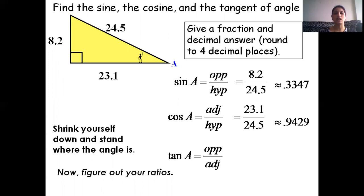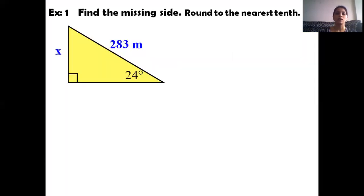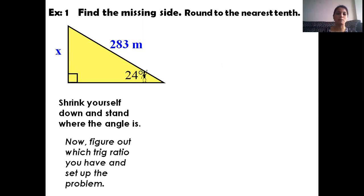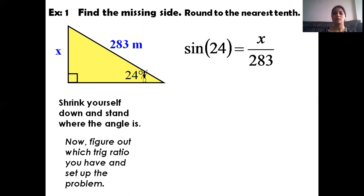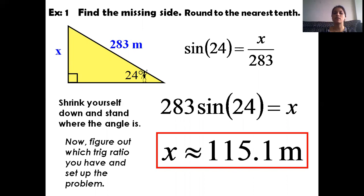Tan A equals opposite side divided by adjacent side, which is 8.2 divided by 23.1. Now let's find a missing side. Example number one: find the missing side rounded to the nearest tenth. In this figure, the angle is 24 degrees and the hypotenuse is 283 meters; the missing side is the opposite side. Using sin theta equals opposite over hypotenuse, sin 24 equals x divided by 283. By cross multiplication, x equals 283 times sin 24, therefore x equals 115.1 meters.